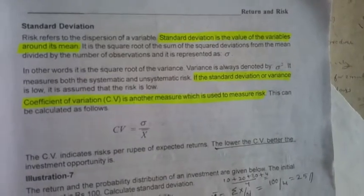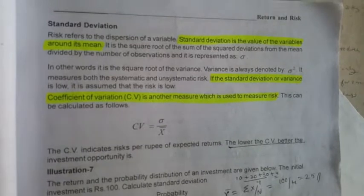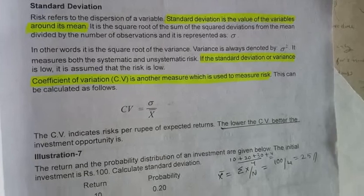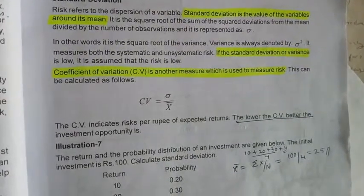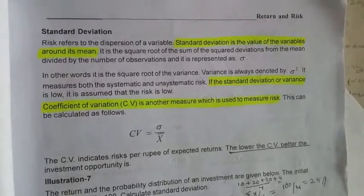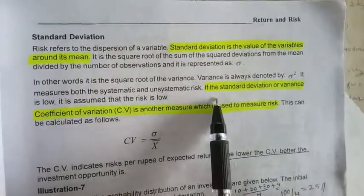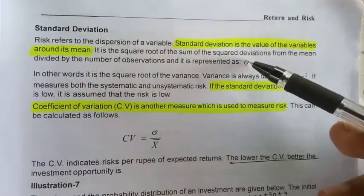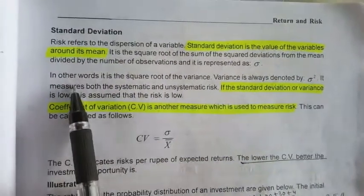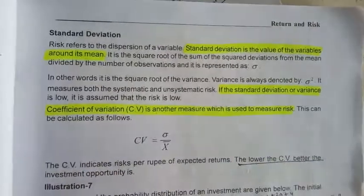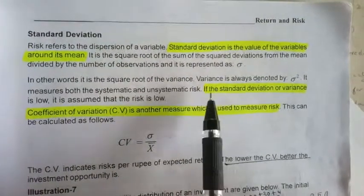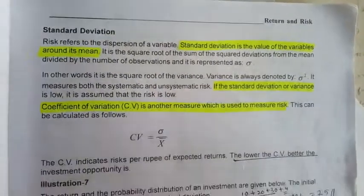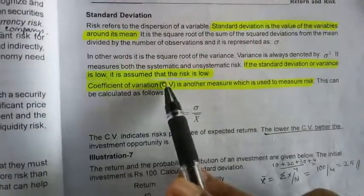Standard deviation is the value of a variable around its mean. This is a series of values. If the standard deviation or variance is low, it is assumed that the risk is also low.